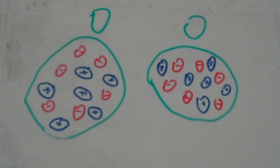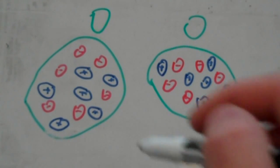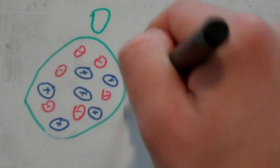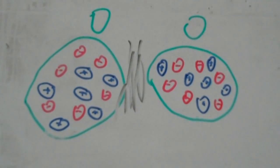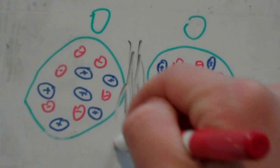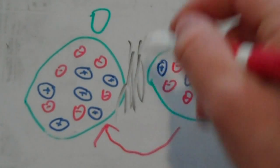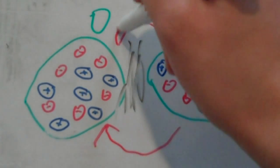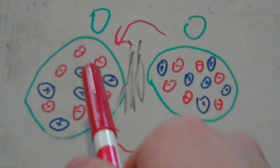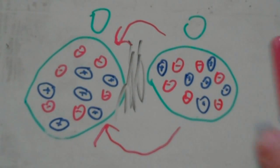It only works when there's a positive charge in one and a negative charge in the other. You can create this by rubbing the two objects together, which will cause electrons to transfer from one to the other, giving one a negative charge and the other a positive charge, so then the objects will stick together.